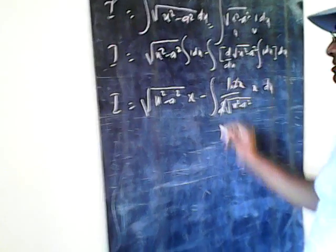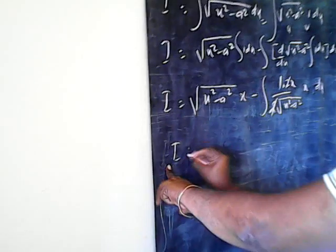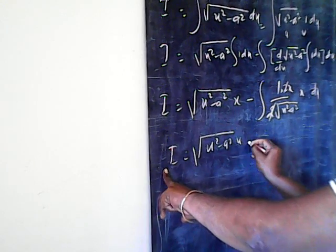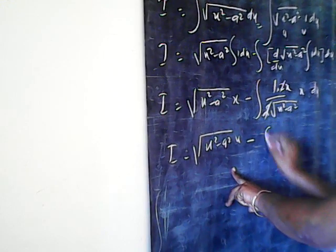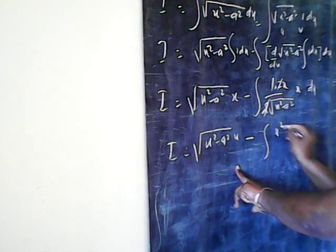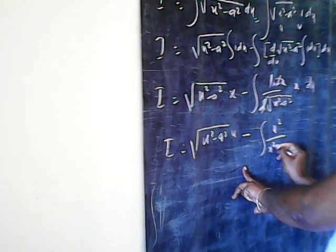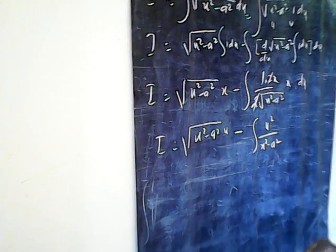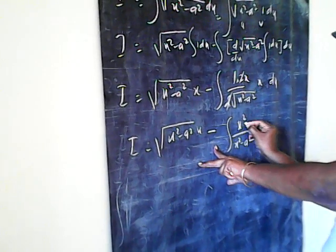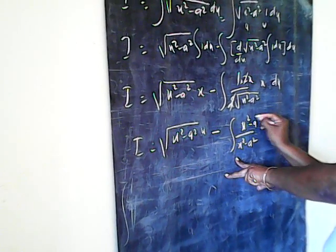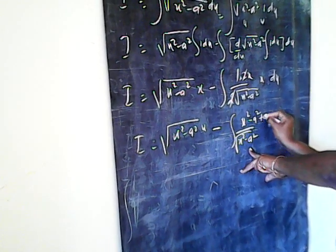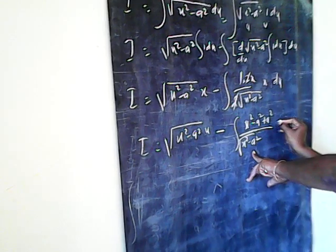This 2x simplifies. So I is equal to under root x square minus a square into x minus x square. Now looking at the simplification rules, we have to subtract this, plus a square into da.